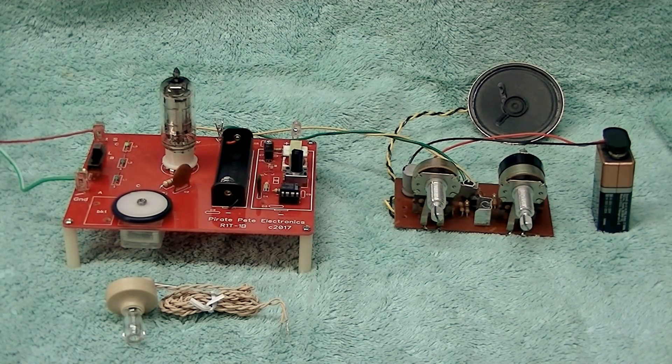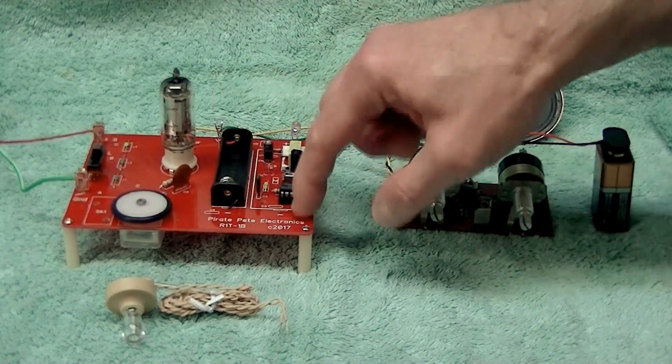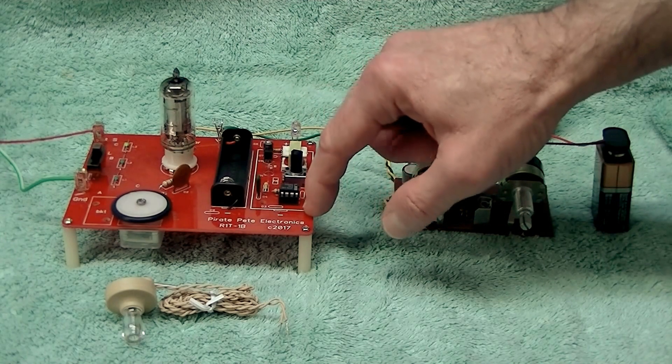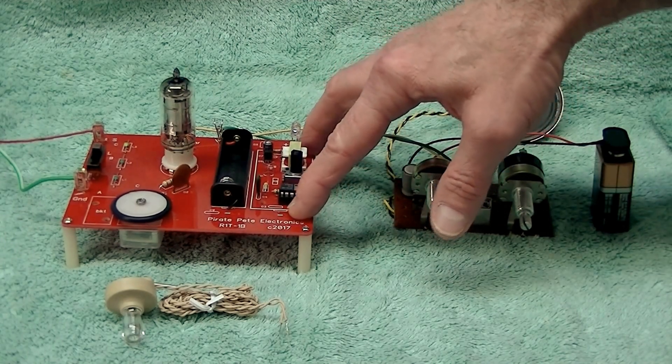But the biggest difference is this kit. You can see we have the AA battery for the filament, and in this square area here with the white outline where you'd normally have your battery holder for your B plus supply, which originally used an odd 22 and a half volt camera battery.